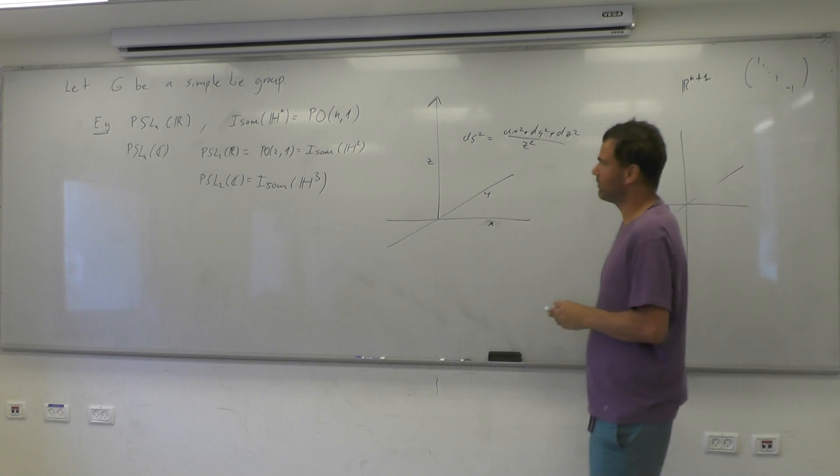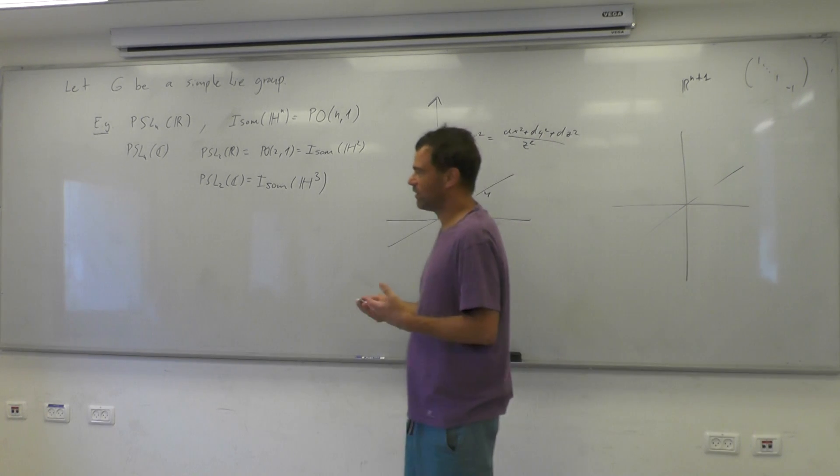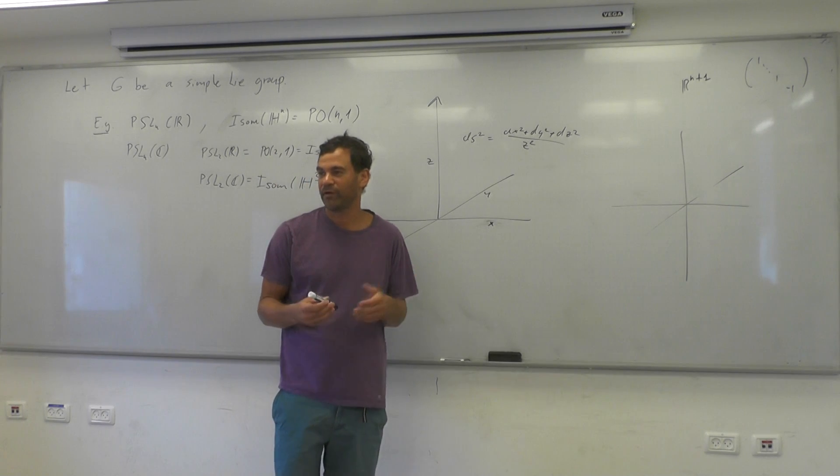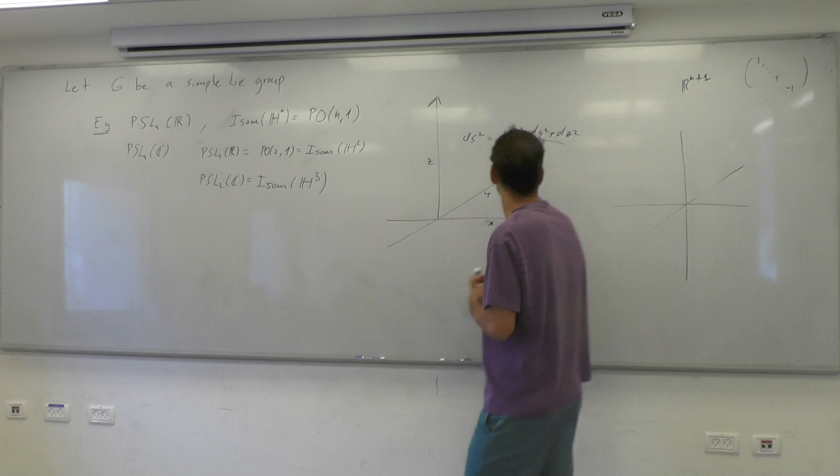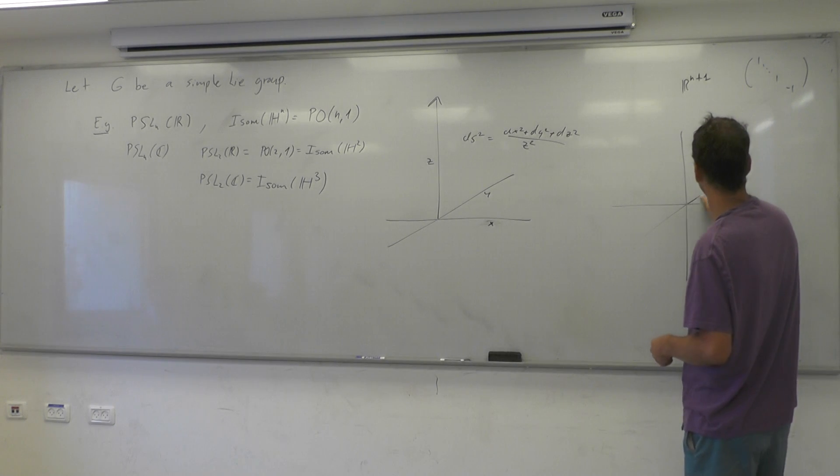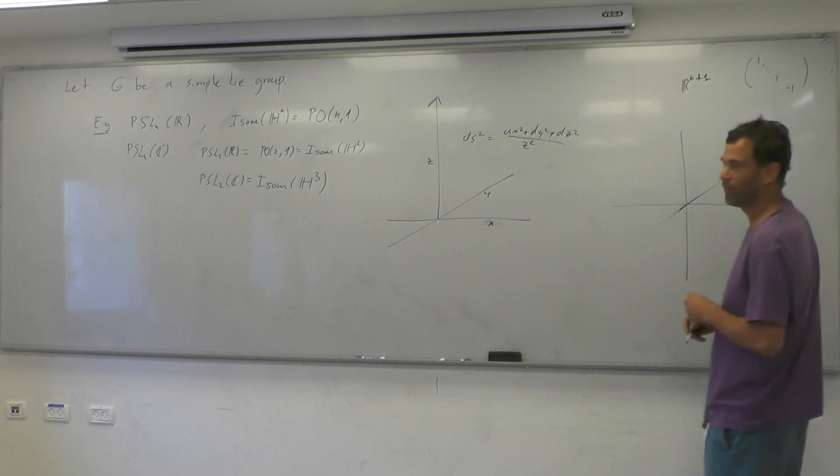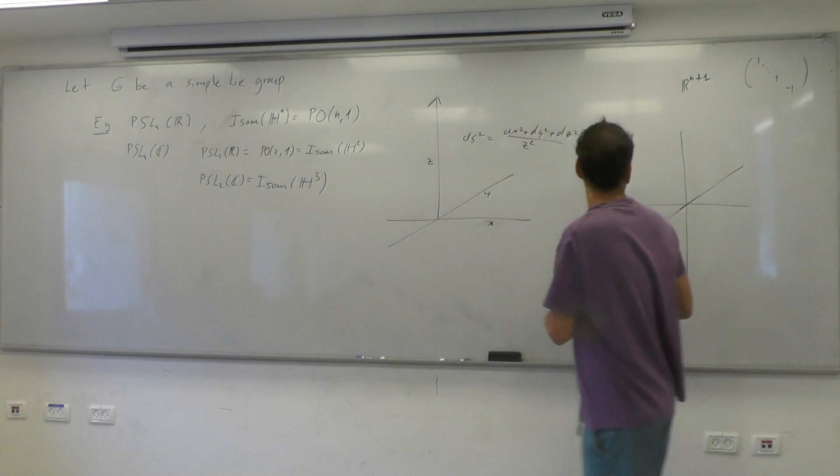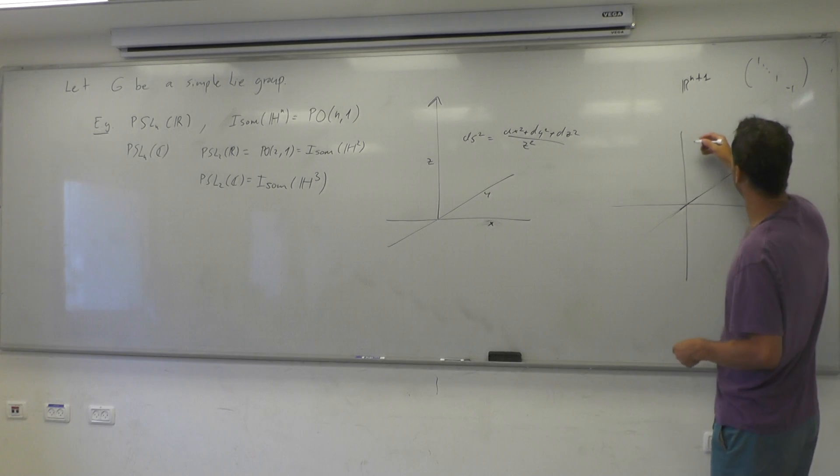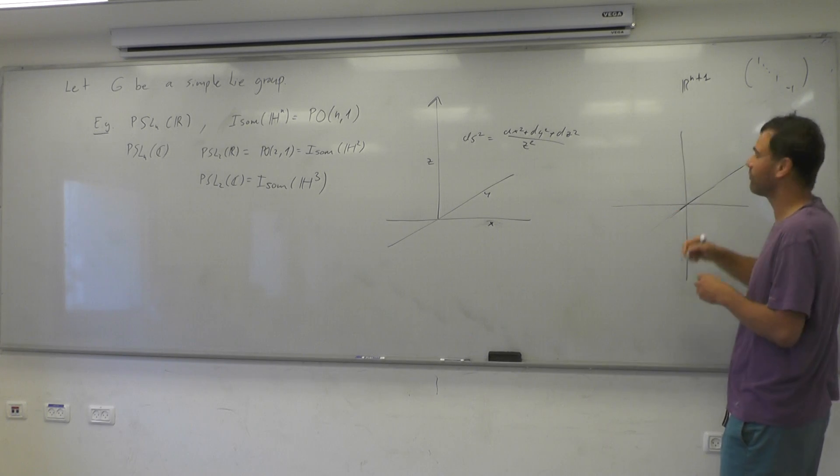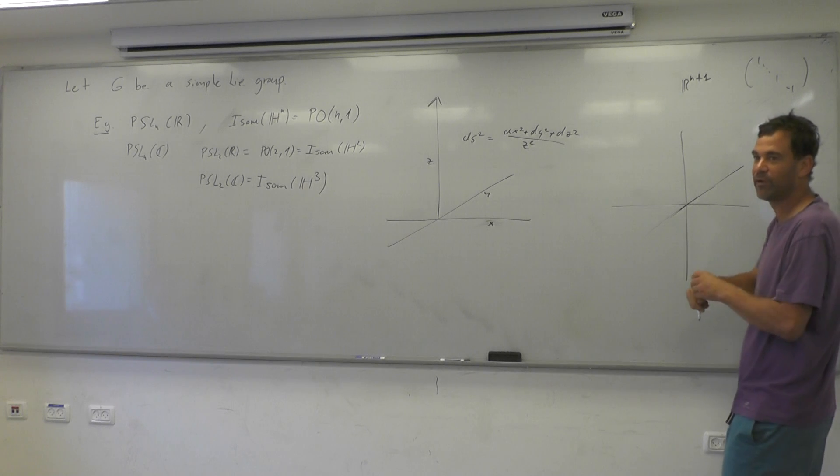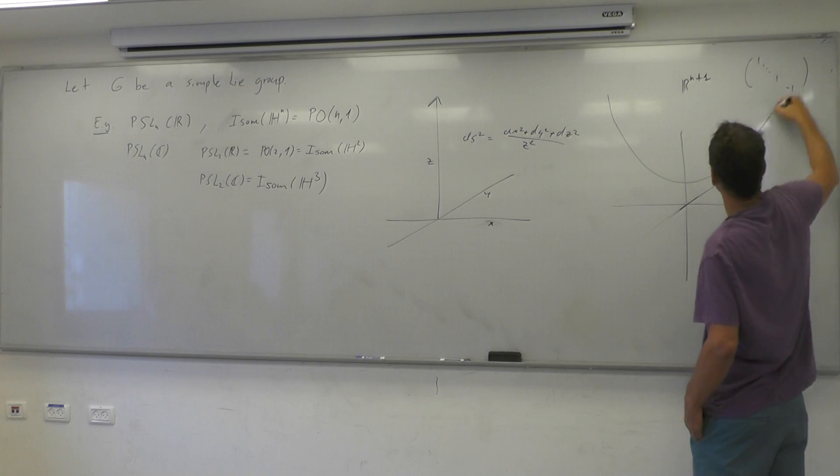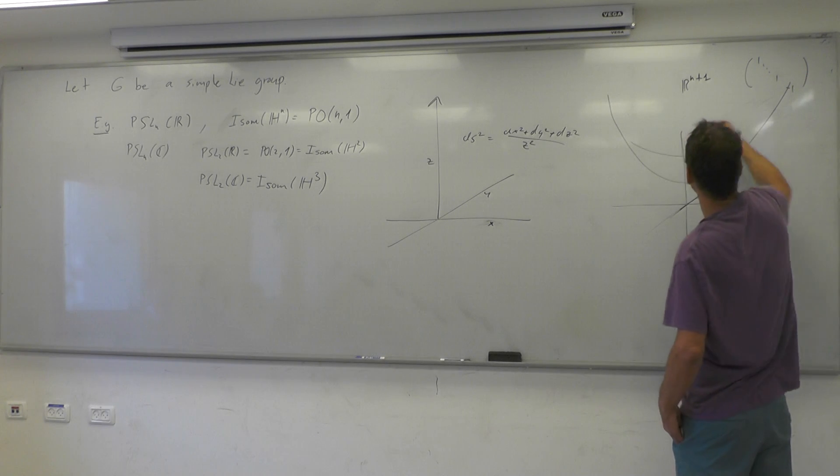It defines, if you want, a bilinear form on R^n, which is not positive definite, so it's not an inner product anymore. But inside, you look at all... It is called Lorentzian form, it's called the Lorentz form, it's related to relativity theory. But inside, you look at all the sub-level sets. So you have the quadratic form, and you look at all the points whose value is exactly one or minus one.